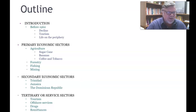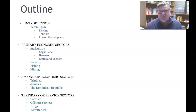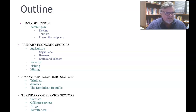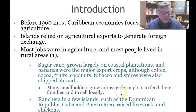Our introduction covers: before 1960, the decline of the sugar industry, the beginning of tourism industry growth, and life on the periphery for Caribbean islands in the world trading network. Primary sectors include agriculture, sugarcane export, bananas, coffee, tobacco, forestry, fishing, and mining. Secondary sectors include manufacturing in Trinidad, Jamaica, and the Dominican Republic. The tertiary sector is services — tourism, offshore services, drugs, and remittances.